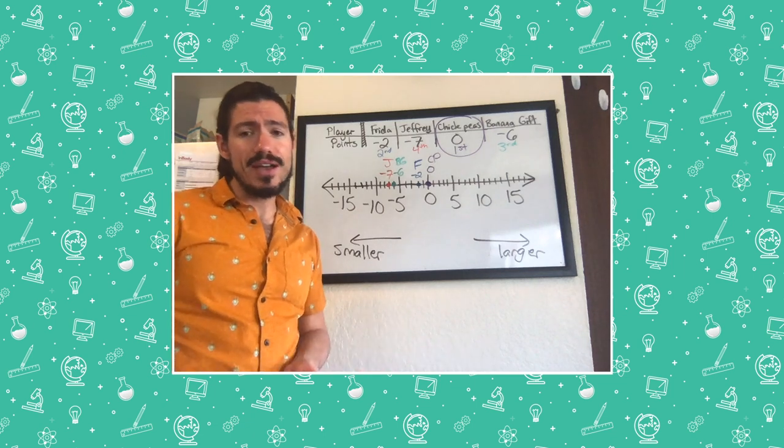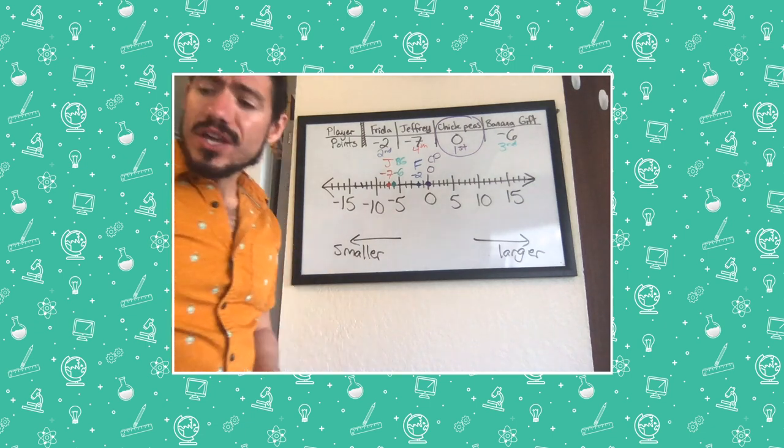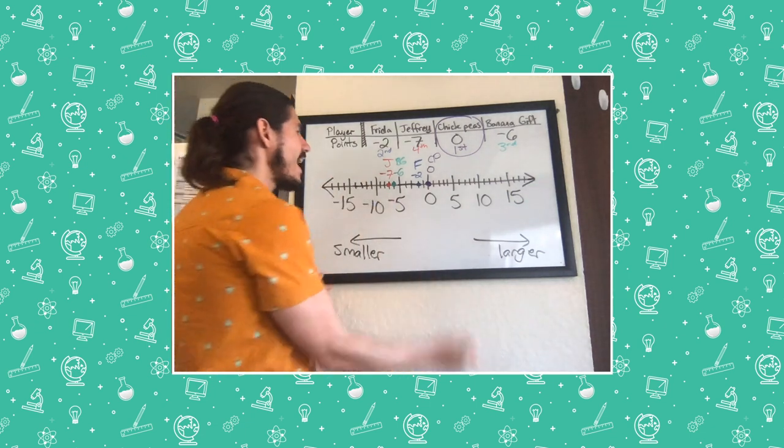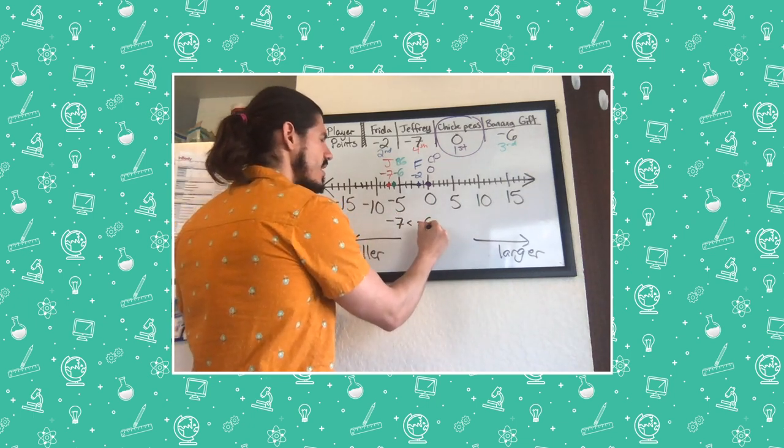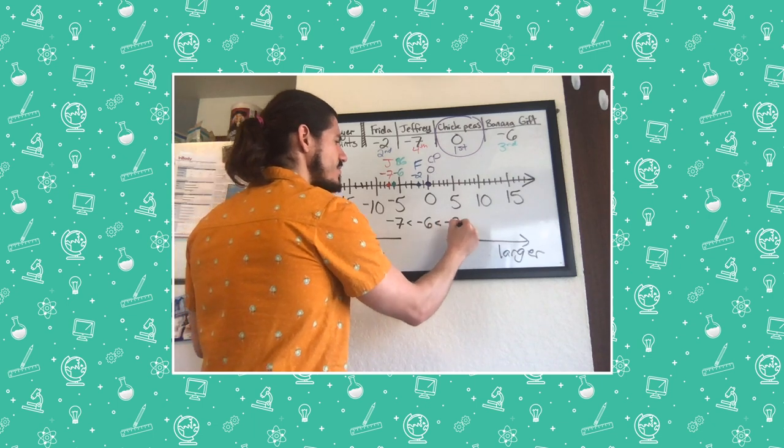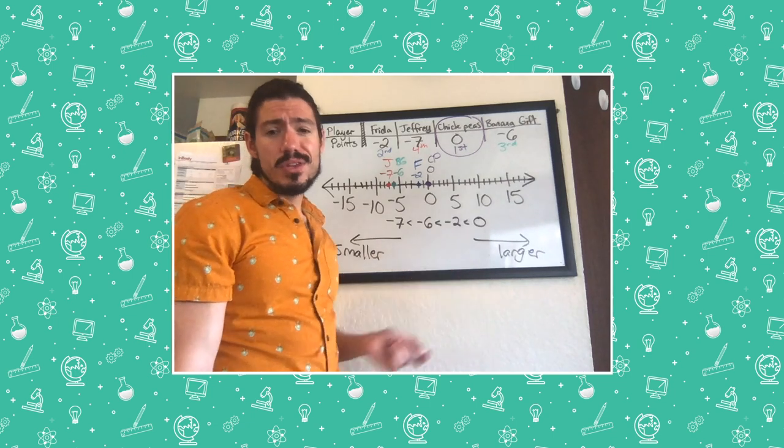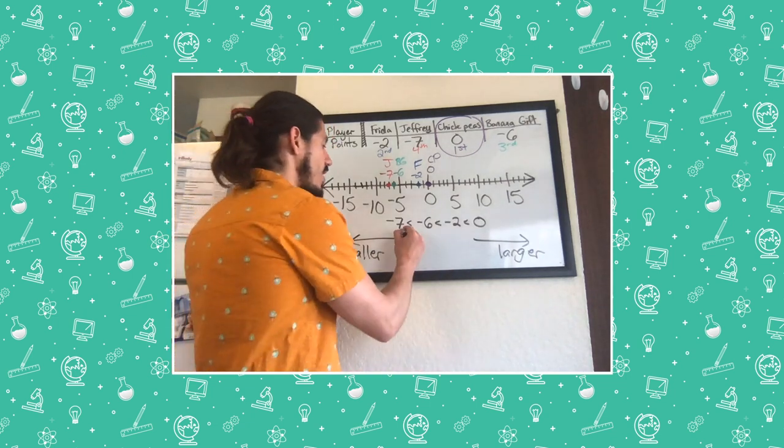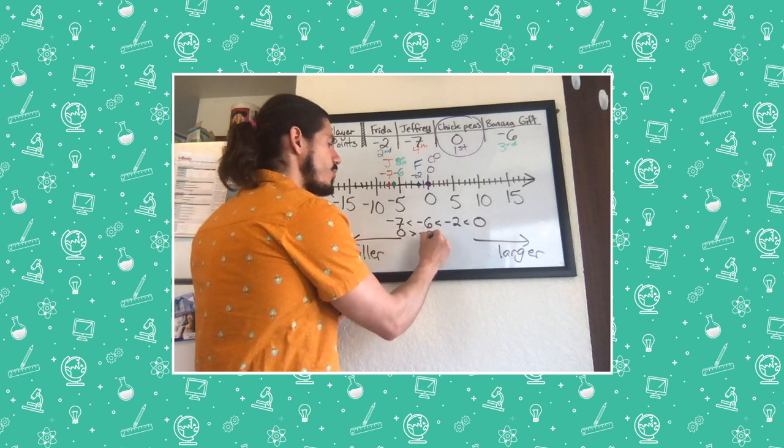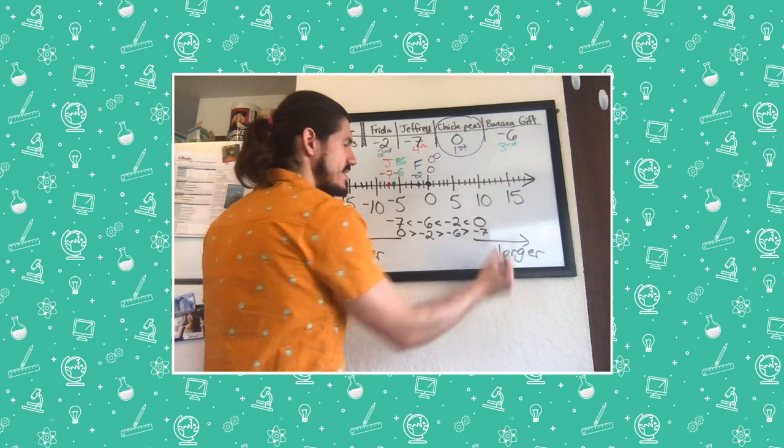Well, when you have negative numbers, sometimes that's what happens. If we wanted to write this mathematically as an inequality, we could. We could say negative seven is less than negative six, which is less than negative two, which is less than zero. That's a mathematical way to put them in order. Just like before, you could reverse them as well. Zero is greater than negative two is greater than negative six is greater than negative seven.